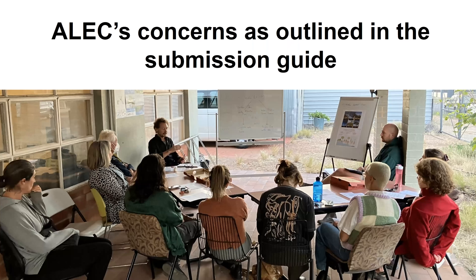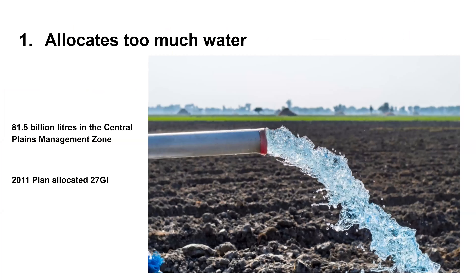We have seven major concerns. But from the top: we are calling for this plan to be scrapped and rewritten. This is a really controversial plan that may contribute to catastrophic outcomes for ecological and cultural values for this region. The key thing a water allocation plan does is allocate an estimated sustainable yield — how much water can be allocated in that region. We argue it's simply too much water.